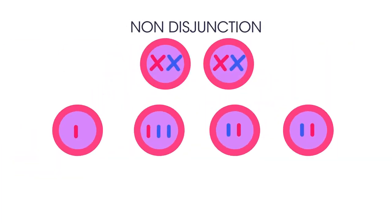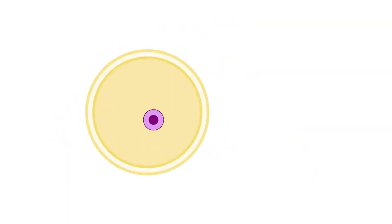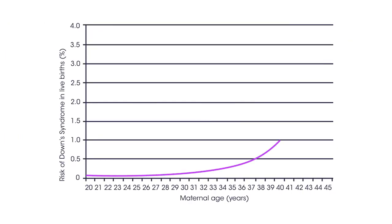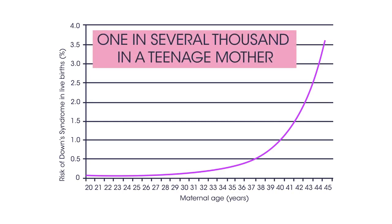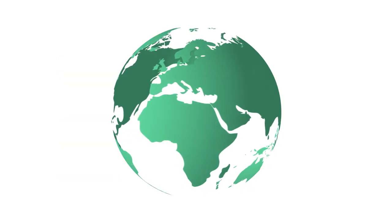Non-disjunction does occur with other chromosomes, but these usually result in miscarriage. This is less likely to happen with the 21st chromosome because it is relatively small. The Down syndrome mutation appears to occur in the production of ova rather than sperm, and its incidence increases with the age of the mother — from approximately one in several thousand in a teenage mother to one in a hundred in a 40-year-old mother.